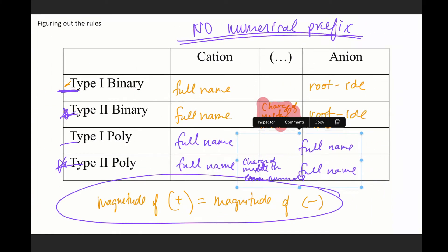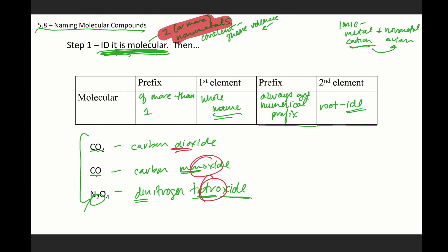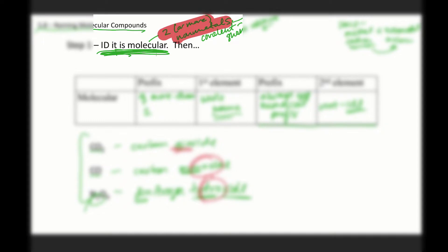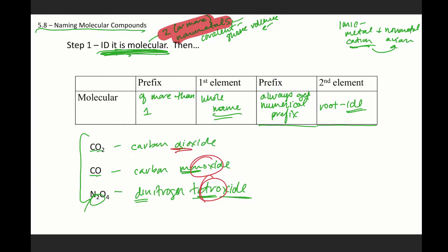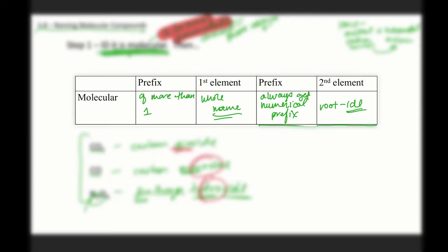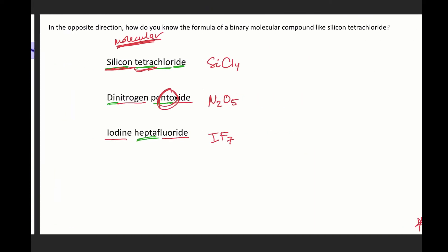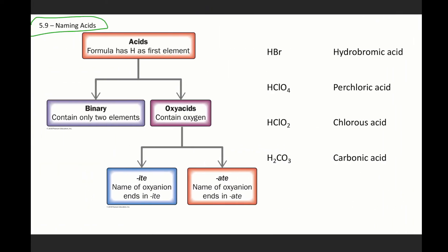We could also have a molecular compound, which would be composed of two or more non-metals. That's your cue, that's what you're looking for. And if a compound is made of two or more non-metals, then you will follow the numerical prefix system, and still end it with '-ide', because it is still binary. Then that brings us to our last type of compound, which is acids.